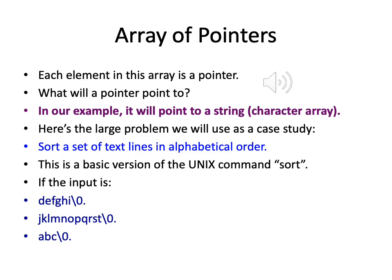Each element of this array contains a pointer to a specific kind of variable. In the previous class we did one example: a simple program that takes in command line arguments, provided at runtime, and performed a simple version of echo — outputting those arguments back to the screen. Today we are going to look at a slightly bigger, more complicated case study which illustrates the real strength of an array of pointers.